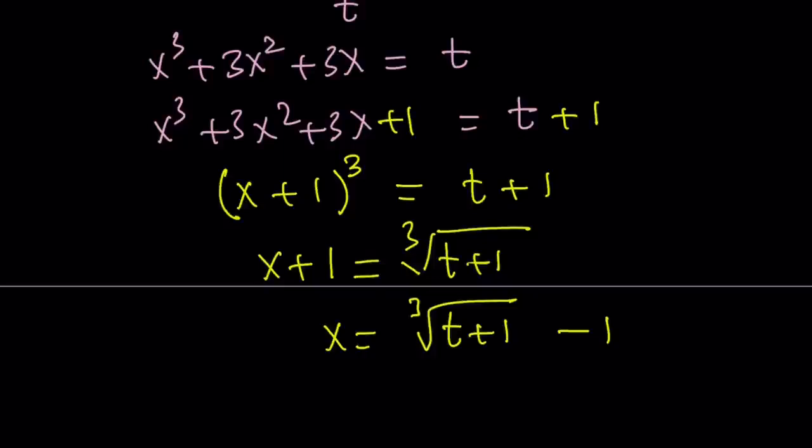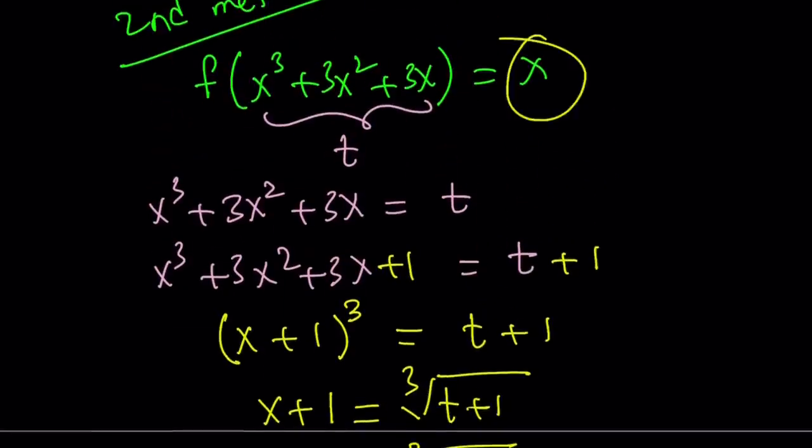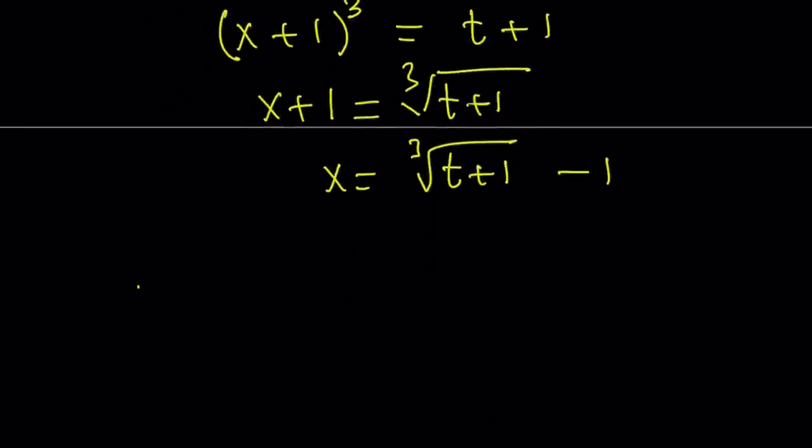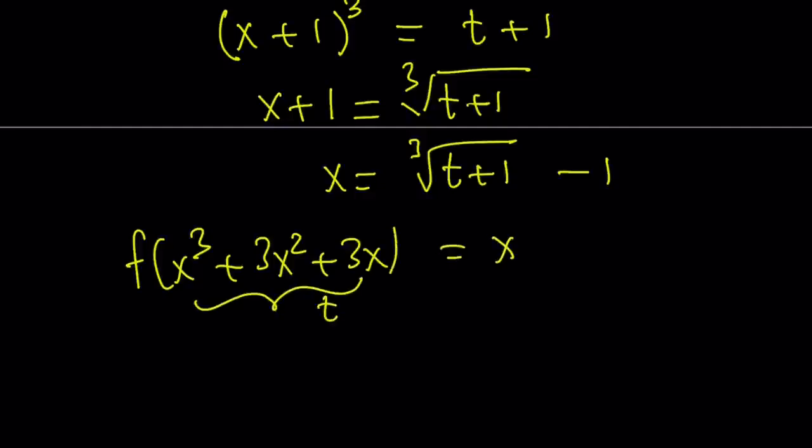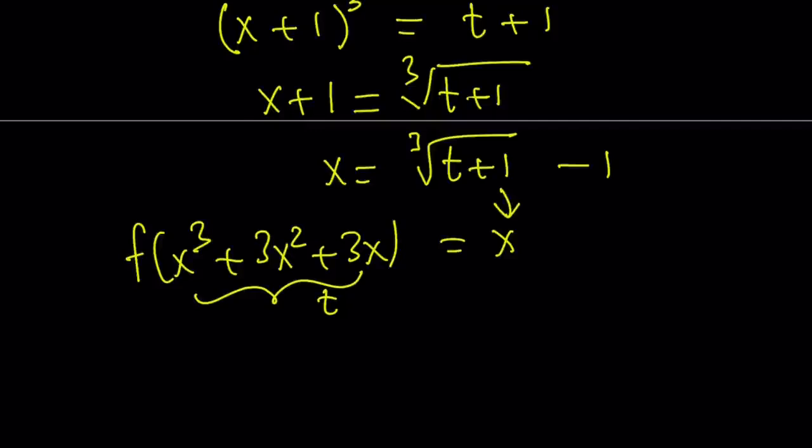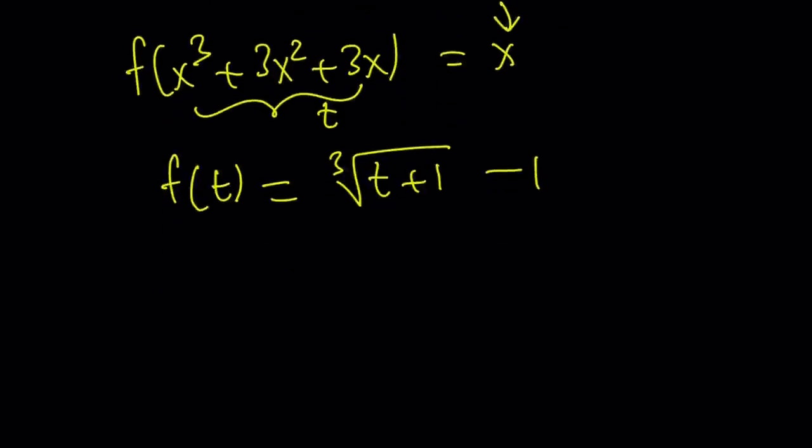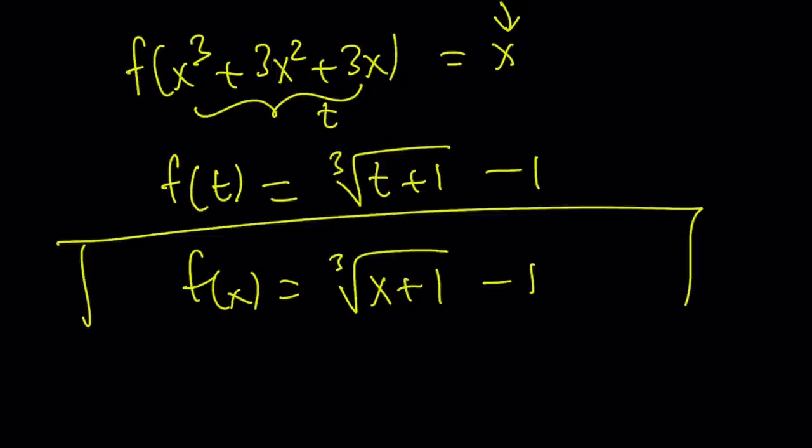That's not the end of the story because we have an x on the right hand side. So we're going to replace that with that. So going back to the original problem. We have x cubed plus 3x squared plus 3x equals x. Now replace the x. Remember this was a t. Now replace the x with that. You're going to get f of t equals the cube root of t plus 1 minus 1. And this gives us f of x equals again forget about the previous x. And this gives us the answer in terms of x.